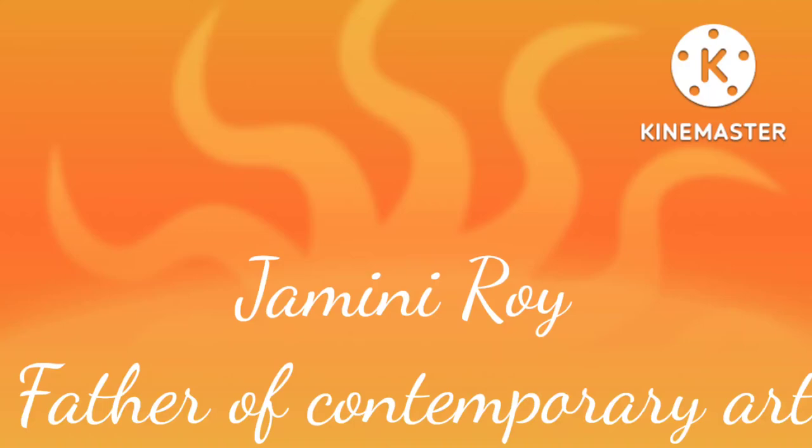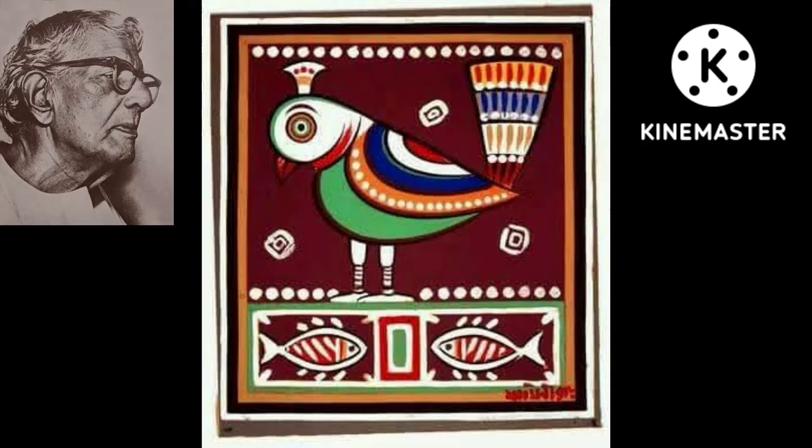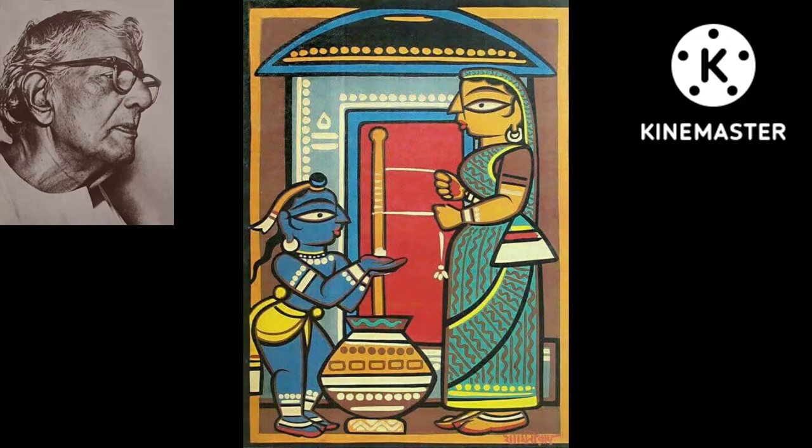Hello everyone, today I would like to take you for a tour about Jamini Roy, the father of contemporary art. Jamini Roy was born in the year 1887 at the Beliator village in the Bankura district of West Bengal. Roy was born into an affluent family of landowners. His father Ramtharan Roy resigned from his government services to pursue his interest in art.